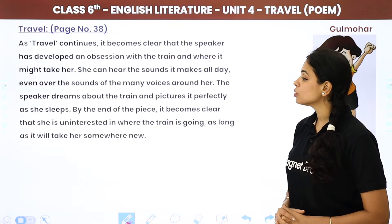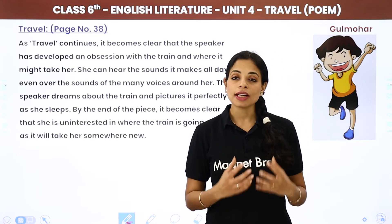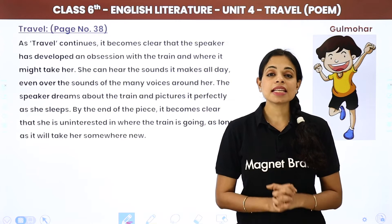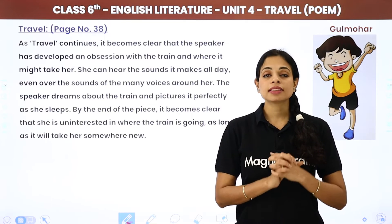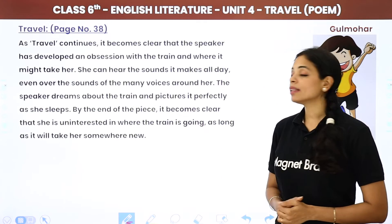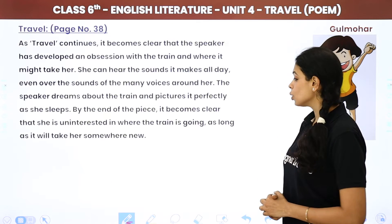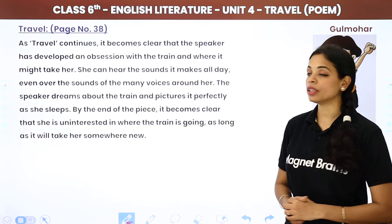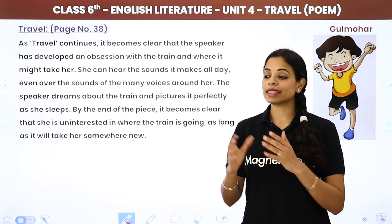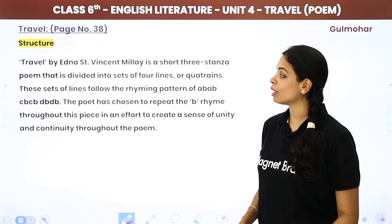The speaker dreams about the train and pictures it perfectly as she sleeps. At night — a time for sleep and dreaming — she can see the cinders in the sky. By the end of the piece, it becomes clear she is uninterested in where the train is going, as long as it takes her somewhere new. All she wants to do is go and travel.